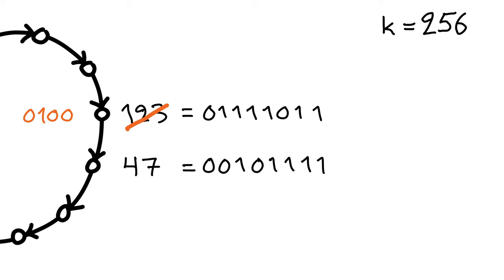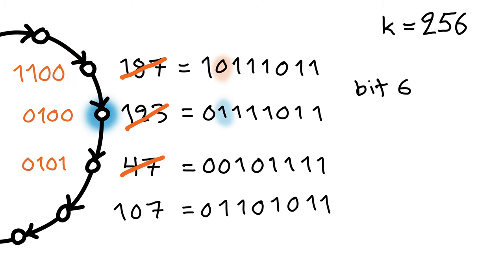And everyone does the same. For example, this node here will also say that bit number 2 differs from its successor. But now the value of the bit is 1, so the new color is 2, 1. Or in binary, 0, 1, 0, 1. And this node here will say that bit number 6 differs. And the value of the bit is 0, so the new color is 6, 0. Or in binary, 1, 1, 0, 0.